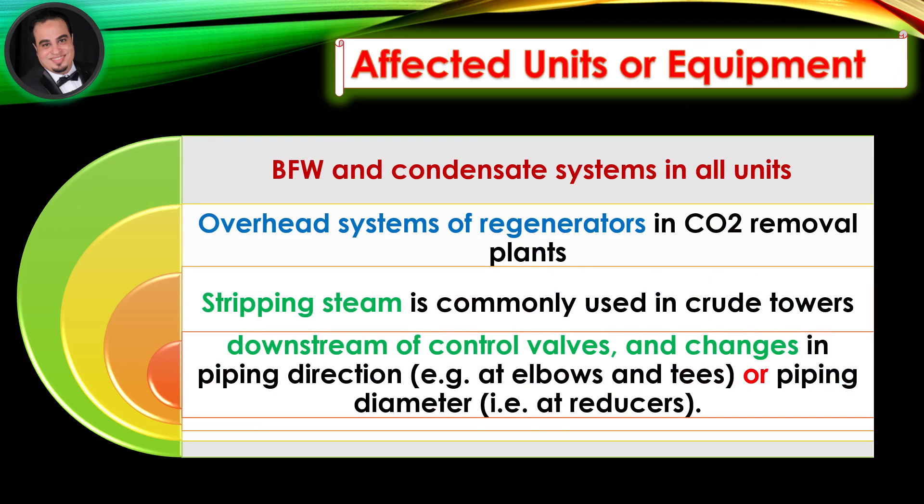Affected units or equipment: Boiler feed water and condensate systems in all units; overhead systems of regenerators in CO2 removal plants; stripping steam is commonly used in crude towers downstream of control valves; and changes in piping direction at elbows and tees or piping diameter at reducers.